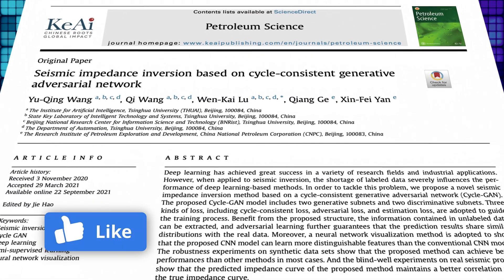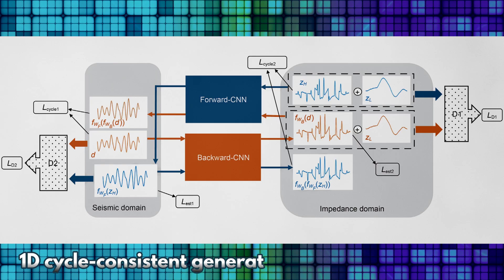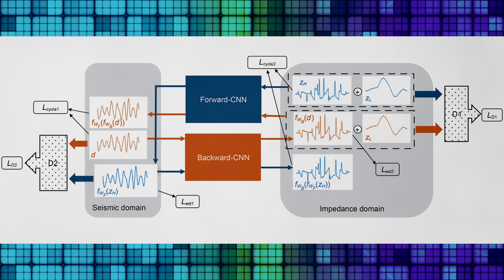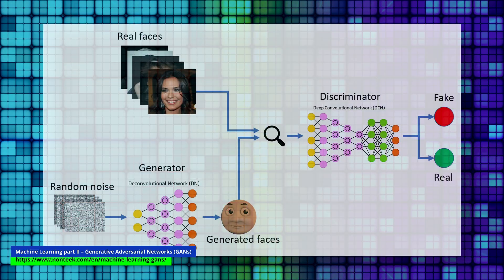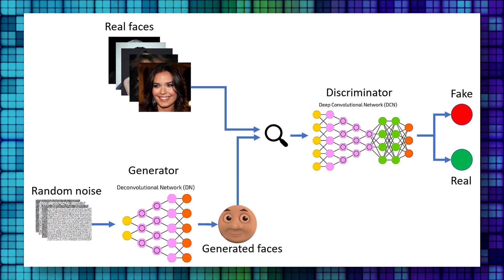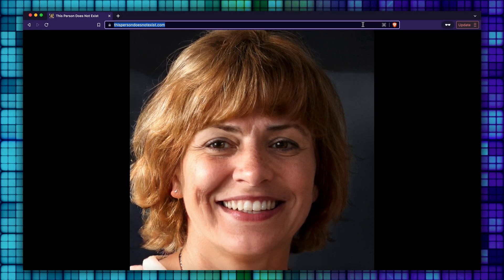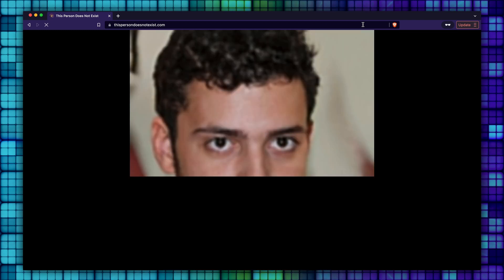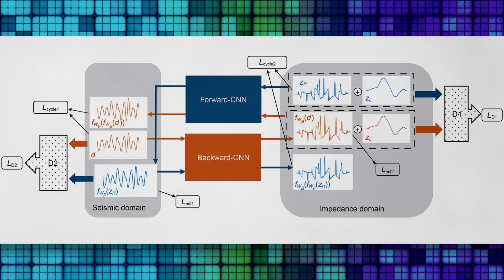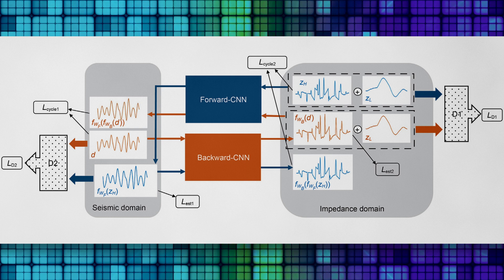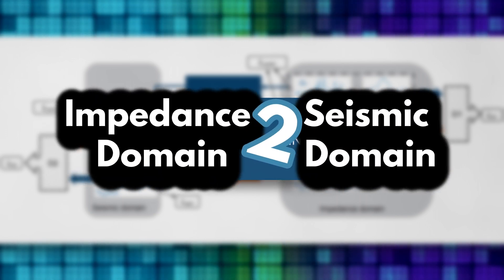In this research, the authors suggest a method for seismic impedance inversion based on a 1D cycle-consistent generative adversarial network, which is effective even when only a few labeled data are available. As a quick recap, generative adversarial networks are used for data generation — for example, this person does not exist, that is the work of a GAN. It basically consists of two networks.